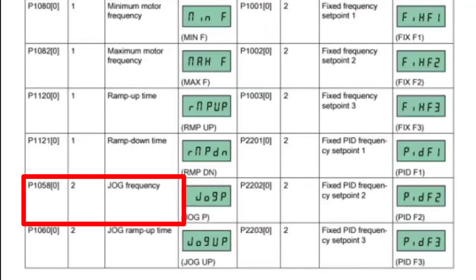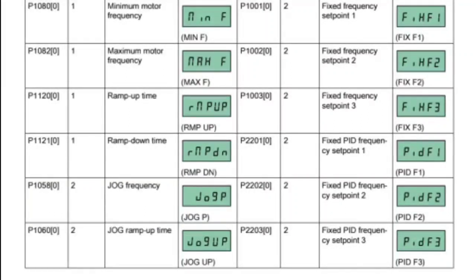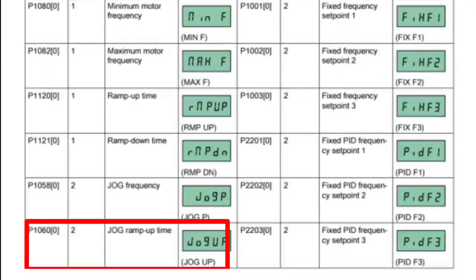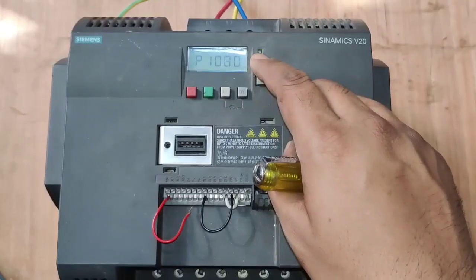P1058 is for jog frequency — if you want to start your motor in jog command, you just need to set P1058. Next parameter is P1060, which is jog ramp up time; jog ramp time is P1060.